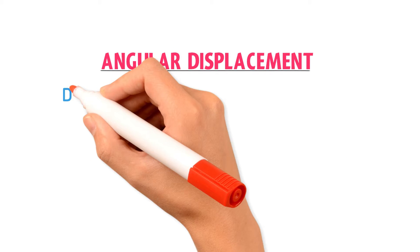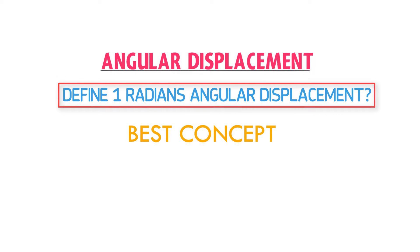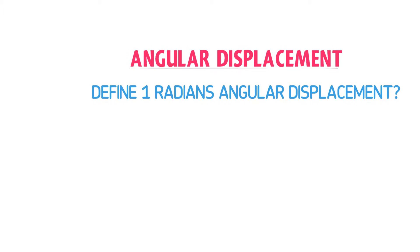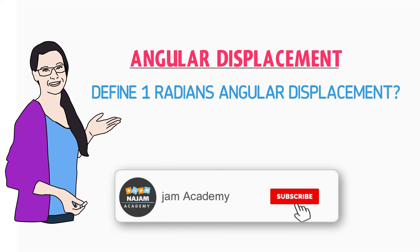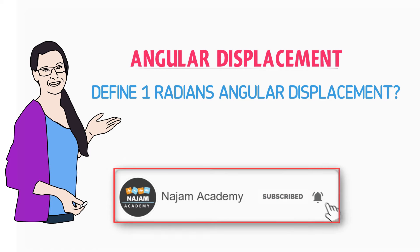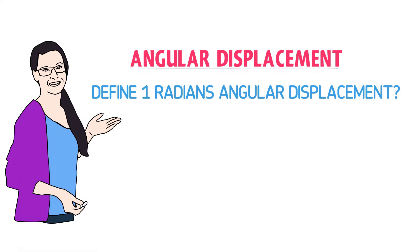Angular displacement — and how can you define one radian angular displacement for an object? You are going to learn the best concept of one radian angular displacement, which no one is going to teach you in the whole YouTube community. If you want to learn the core concepts of physics and maths, click on the subscribe button to get access to 100 videos for free.